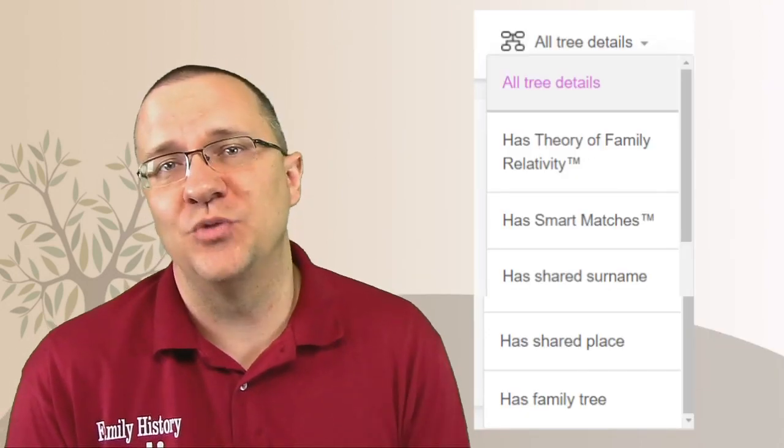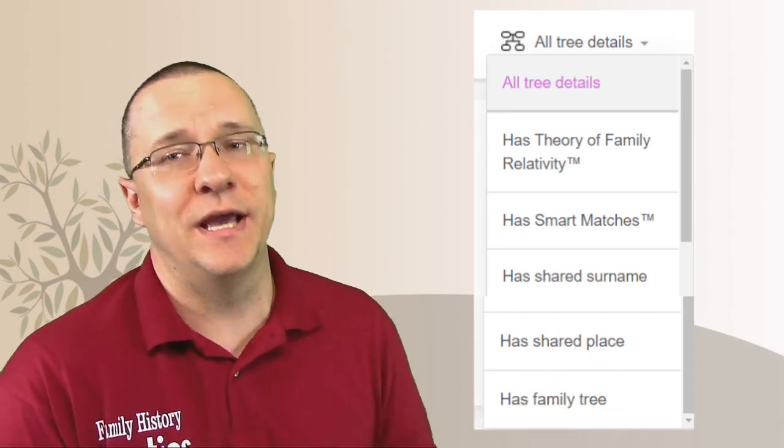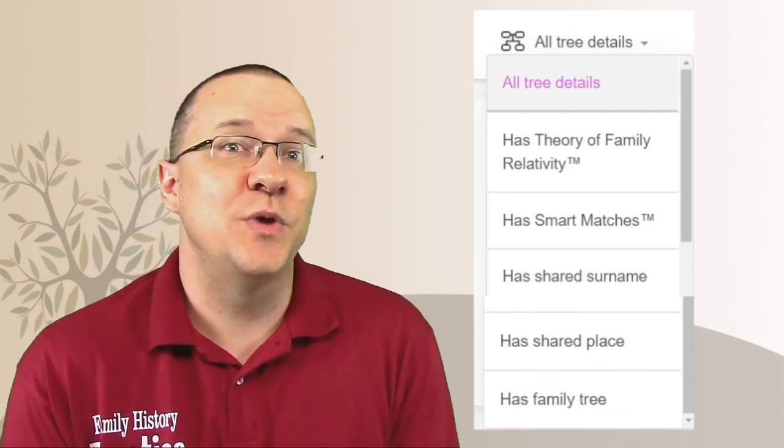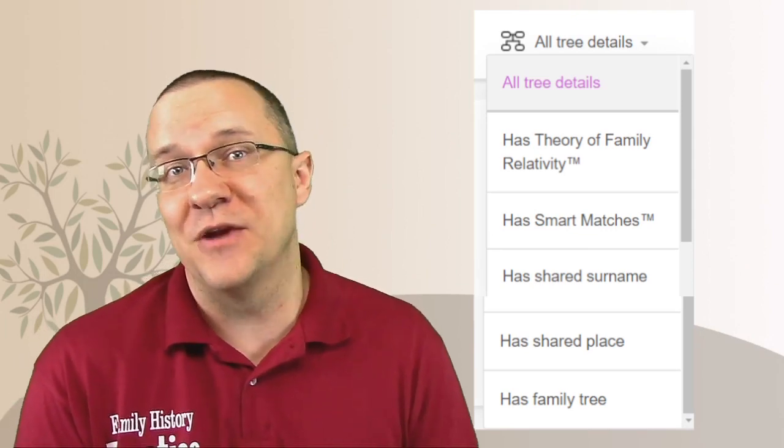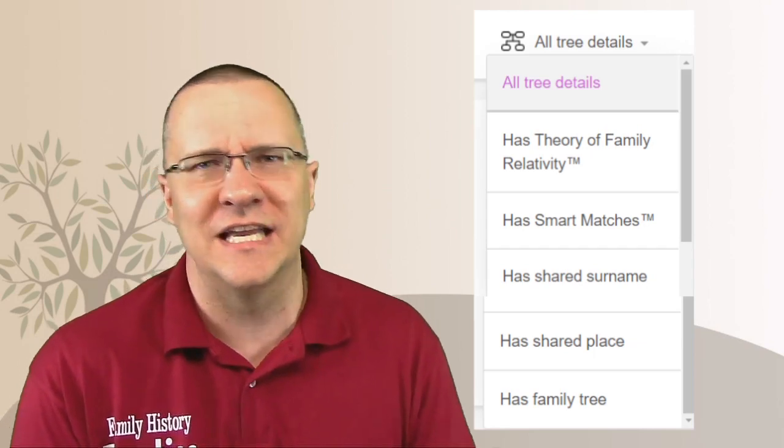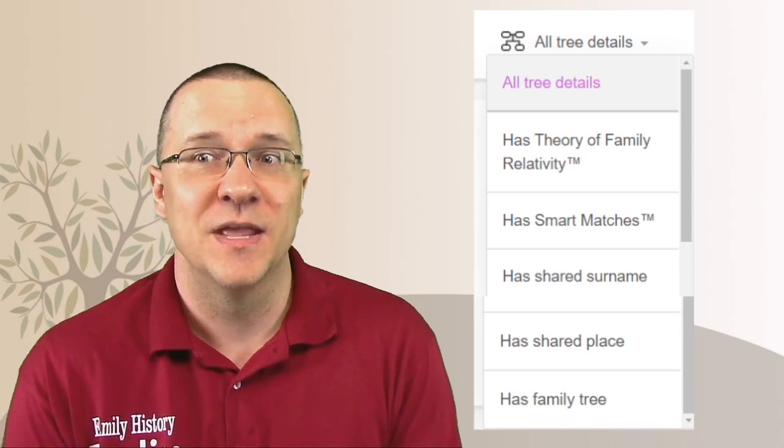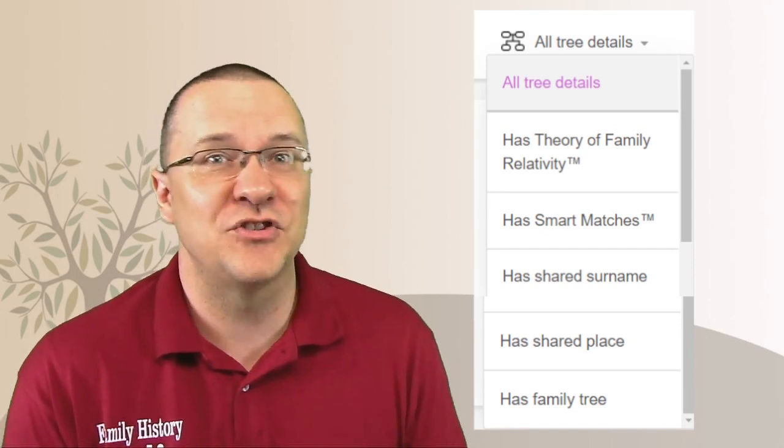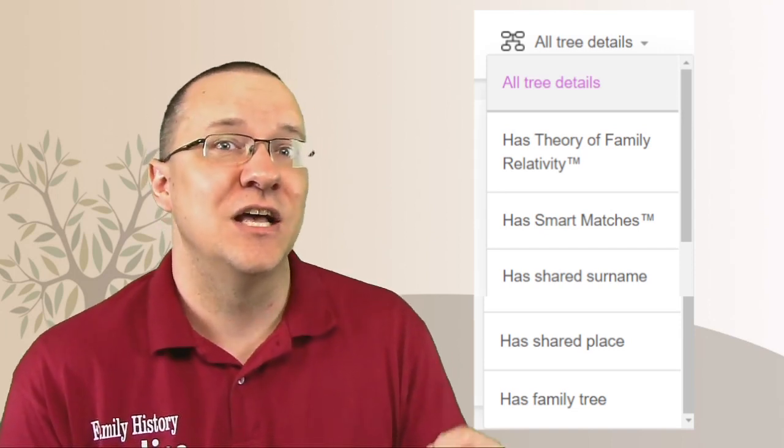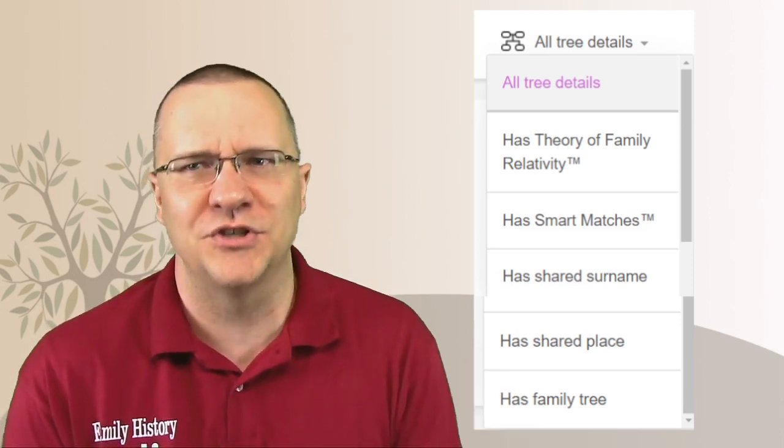On MyHeritage, when we look at the all trees detail, there's actually five different ways that we can look. First, we can look for those that have a theory of family relativity. This has some automated features of actually connecting you through trees and records on MyHeritage. Next, we can look through whether they have smart matches. This is like if the information in the tree is similar enough that it's going to call it a smart match.